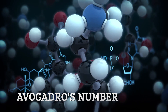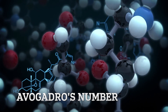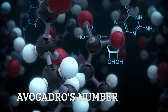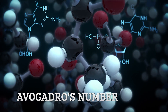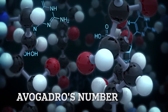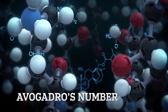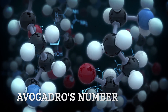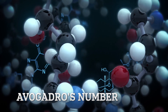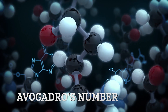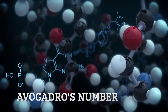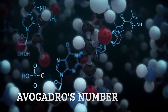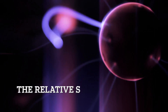Number 5: The Italian chemist Avogadro proposed that at the same temperature and pressure, equal volumes of different gases contain the same number of molecules. Avogadro's number is defined as the number of atoms in 12 grams of carbon and is approximately 6 followed by 23 zeros.